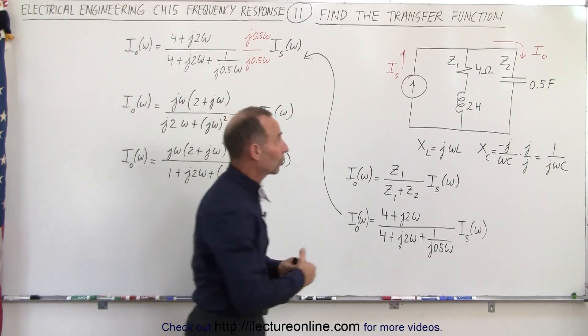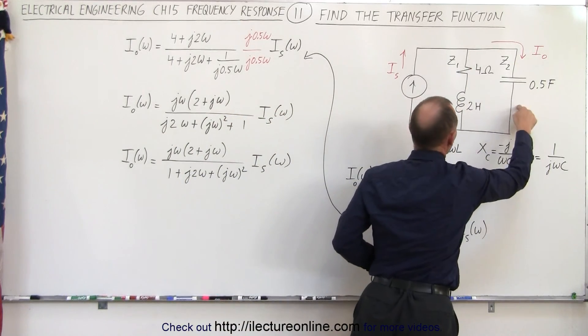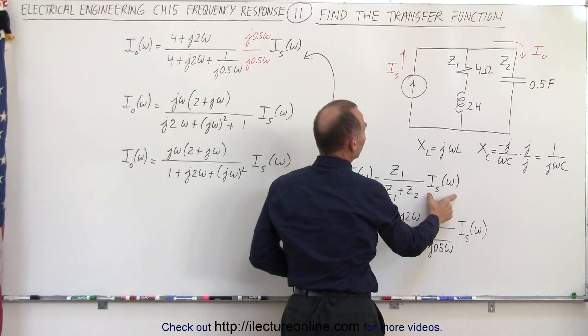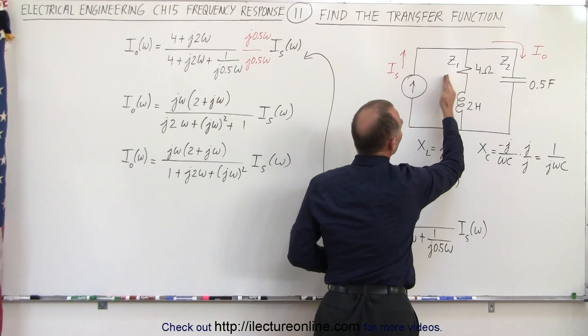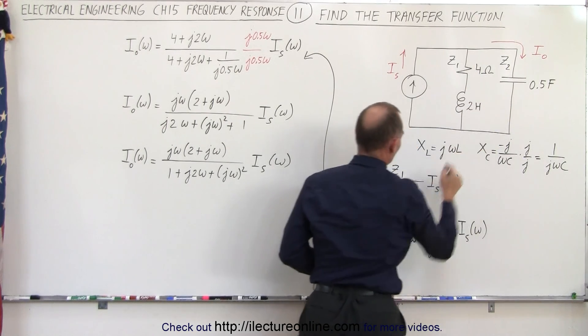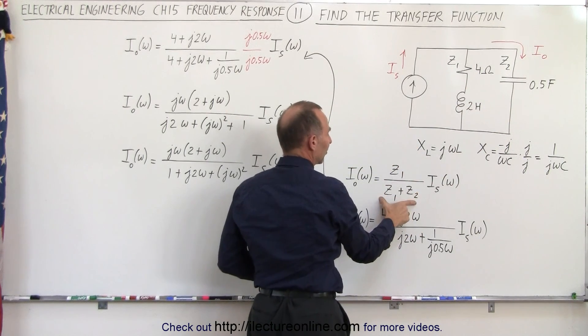Now if you want to know what the current in the output is in these branches, the current in that branch is going to be equal to the current of the source times the impedance in the other branch divided by the sum of the impedances in the two branches. So that will be Z1 divided by Z1 plus Z2 times the source current.